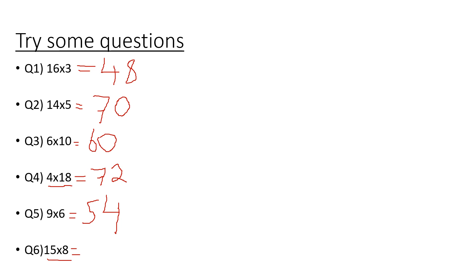For 8 times 15: double 15 is 30, double again is 60, double again is 120. You can of course also use partitioning to work it out. Hopefully that makes sense. For question 1 you'd do 10 times 3 plus 6 times 3 and add the answers together.